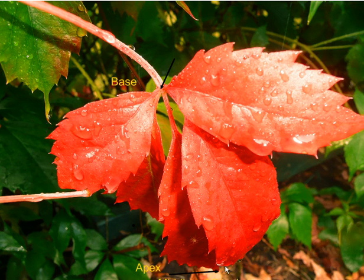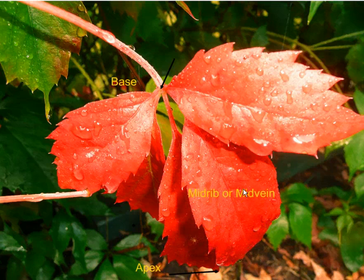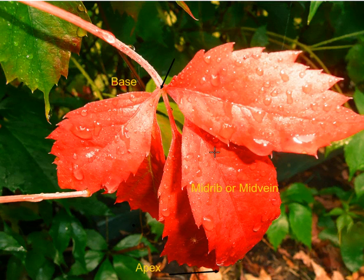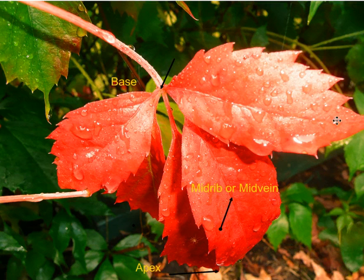Then we're going to look at the center of our leaf, and that is called the midrib or the midvein. You'll see it's very pronounced right down the middle. That's our midrib or midvein, and if we're looking at the other sections, you can see the midrib or midvein there as well.